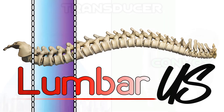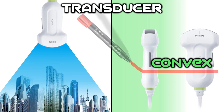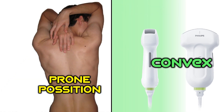Lumbar sonar anatomy. Due to the depth of the neuroaxial structures, a low-frequency curvilinear probe is preferred. This will also allow the exploration of various vertebrae or intervertebral spaces. When exploring the lumbar region facet joints, it is recommended to place the patient in a prone position with a pillow below the abdomen. This will flex the lumbosacral spine.